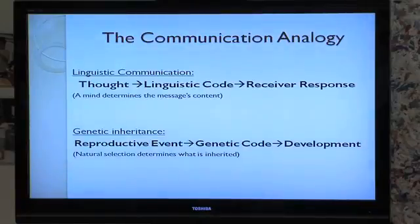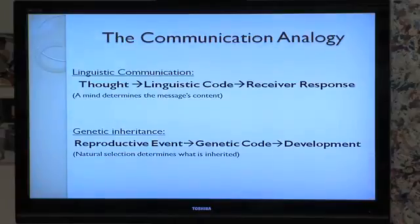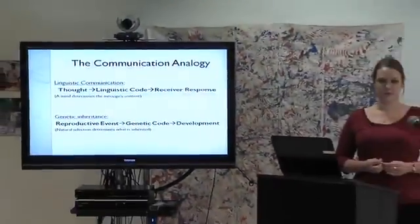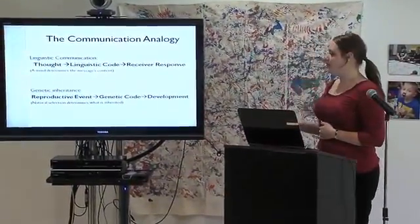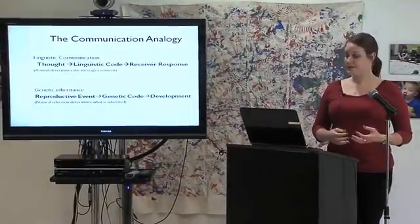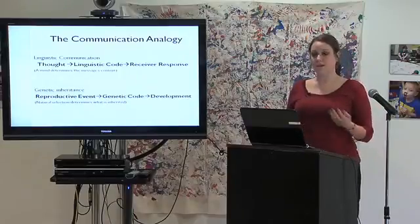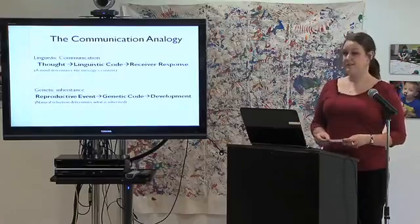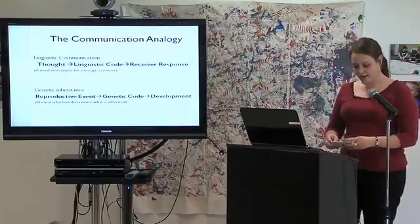Similarly, in the genetic inheritance system, in animals, you have a reproductive event — it's probably sex. Then all the genes copy themselves. DNA, that happens in the cell and in the zygote, and development occurs. Nine months later, you've got a baby. That's also pretty remarkable. So there's a real similarity in the process — information is being transferred from one system, a mind or a reproductive event, and it manifests in a certain sort of way: a message, and there's communication occurring.